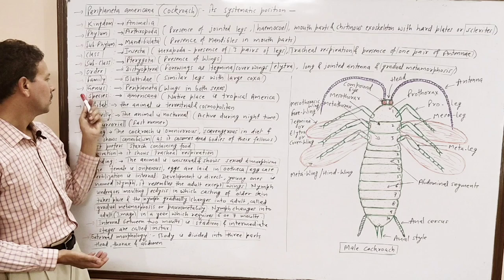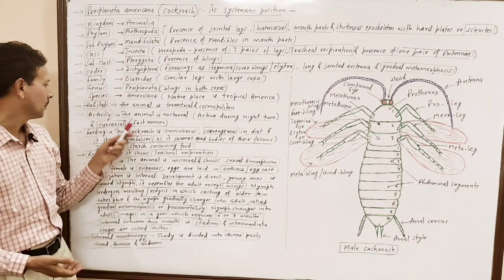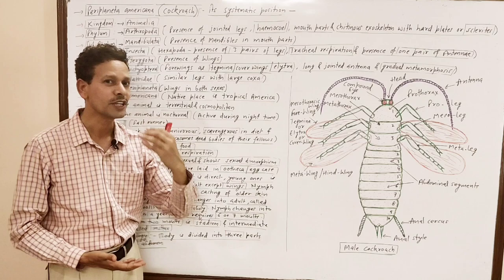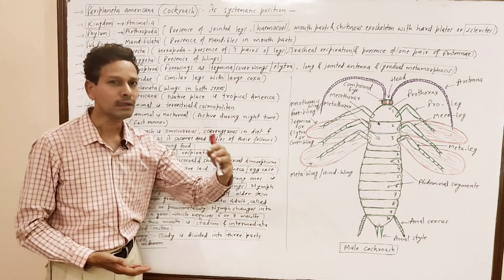Species: americana — its native place is tropical America. Habitat: the animal is terrestrial, strictly found on land in dry conditions. It is cosmopolitan — found everywhere — in kitchens, railway stations, and similar places.